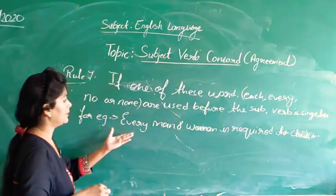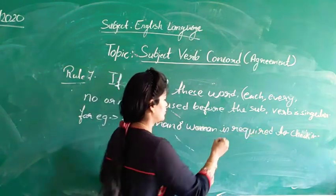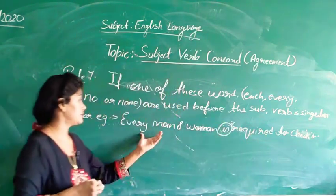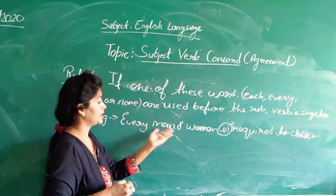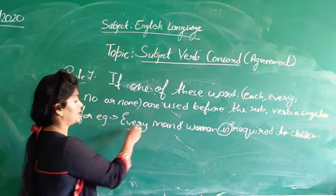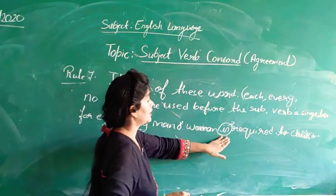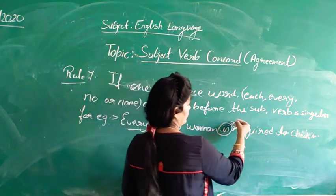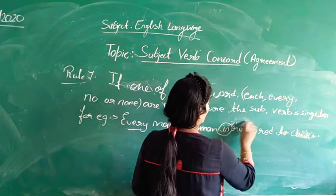Let's see this example: 'Every man and woman is required to check in.' In our subject, we are having two subjects — man and woman — but because we have used the quantifier 'every,' the verb is in singular form.